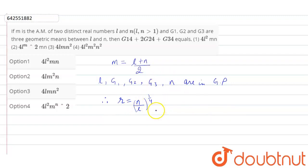Therefore, g1 is equal to l into n by l to the power 1 by 4. g2 is equal to l into n by l to the power 2 by 4. And g3 is equal to l into n by l to the power 3 by 4.